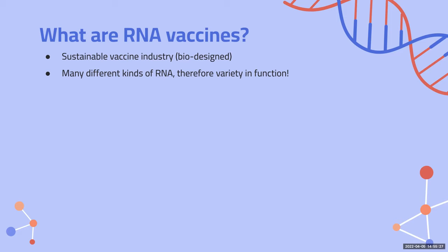RNA vaccines are designed RNAs that enter our cells and have various functionalities depending on the type of RNA present. For example, Pfizer vaccines are mRNA vaccines that produce specific proteins to increase immunity against coronavirus. RNA vaccines have many advantages over traditional vaccines: they are not infectious, making them safer; humans show a better and more efficient immune system response; the design is easier and quicker once you understand the process; and as the technology expands the cost decreases. Since fewer chemicals are used, they're also more environmentally friendly. Overall, RNA vaccines are much more sustainable, and sustainability in medicine matters.